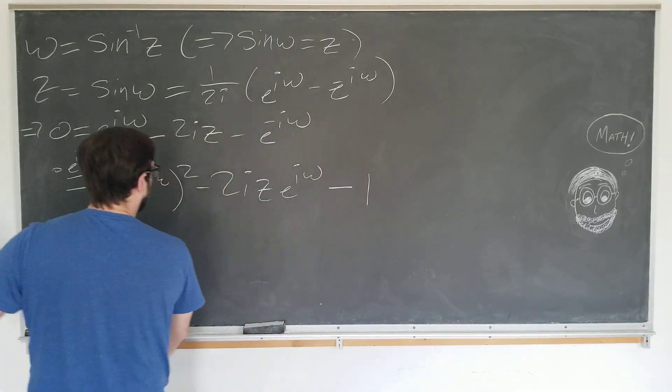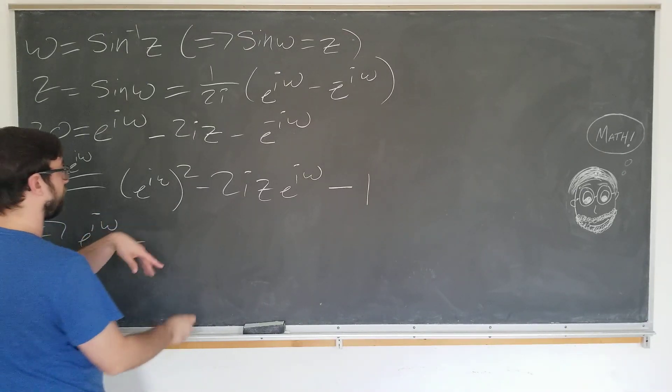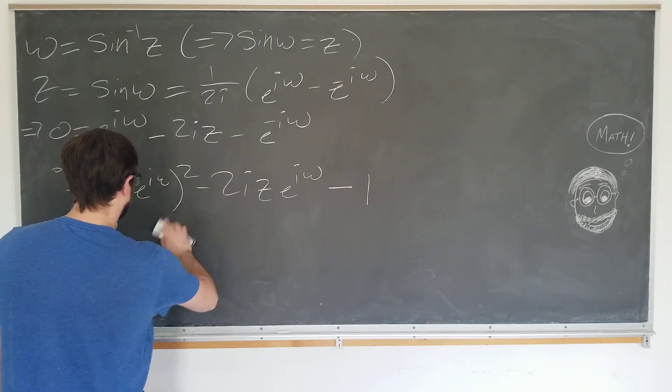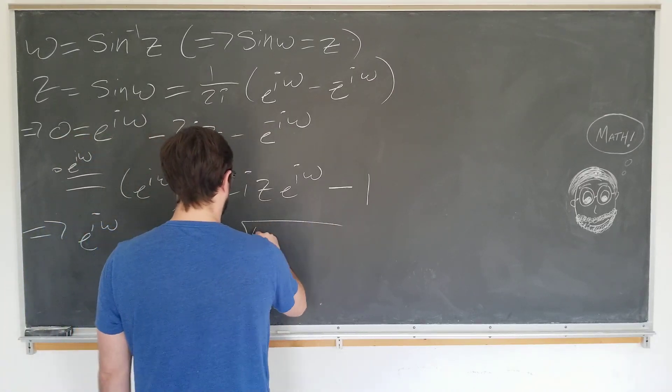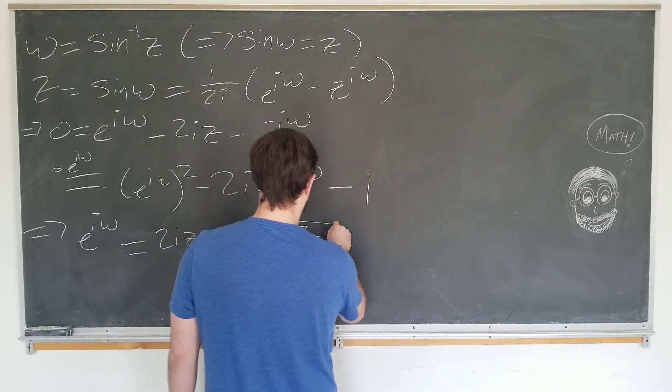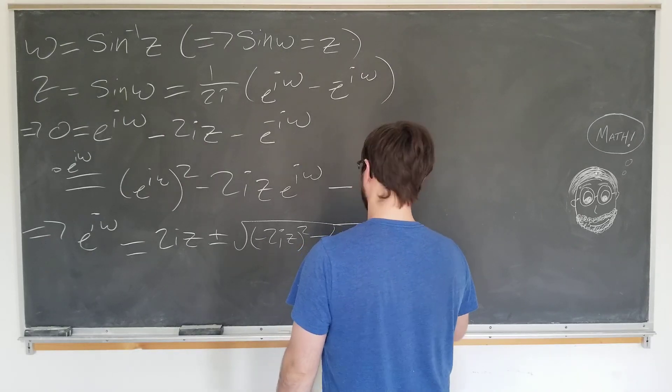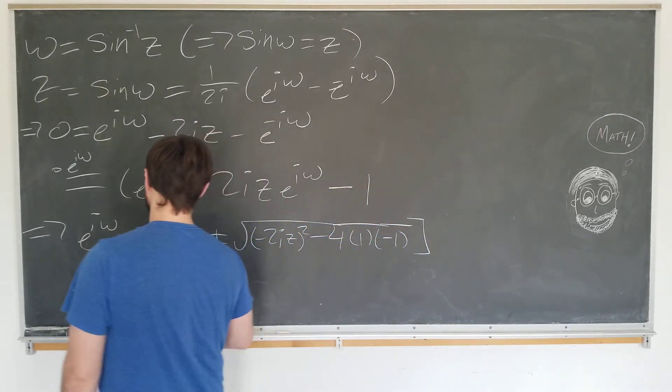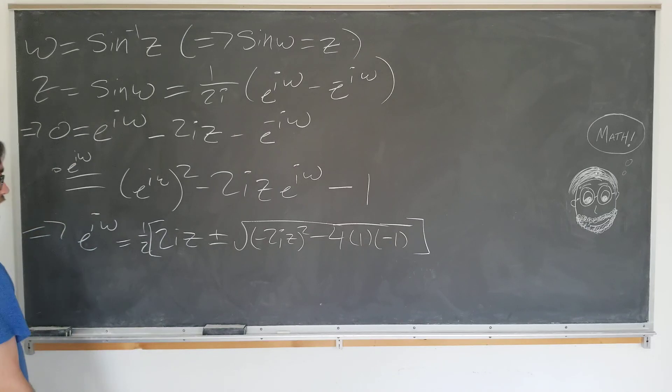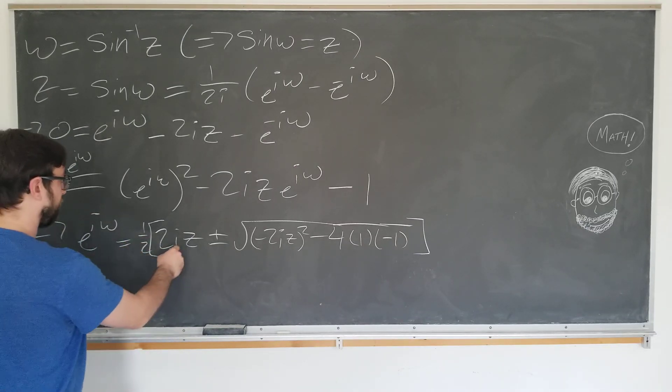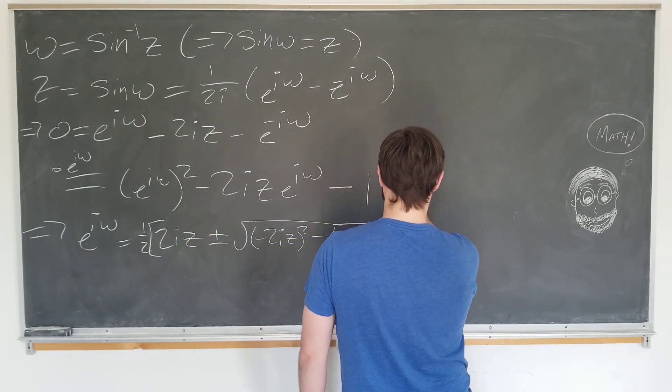Use the handy-dandy quadratic formula. Now e to the i omega is, okay, negative b which is 2i z plus or minus the square root of b squared, so minus 2i z squared minus 4ac. 4 times 1 times negative 1 over 2a, which a is just 1 here. So it becomes 1 half times this, which we can simplify as follows. This part simplifies to become i z, obviously. This part is a bit more tricky.